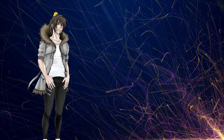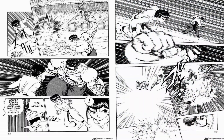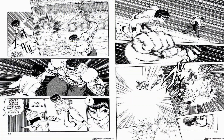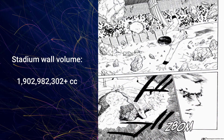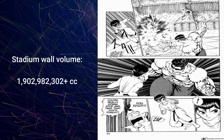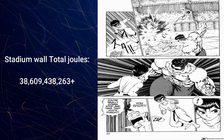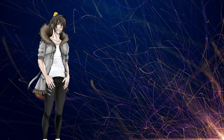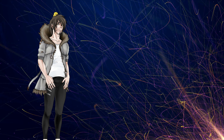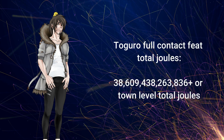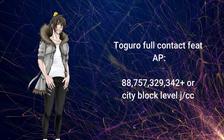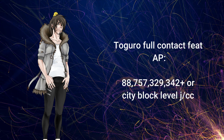For this feat, we're looking at a volume of this many cubic centimeters of cratered rock, coming in with total joules of this many. We still have the stadium wall to get — based on its size we're looking at this many cubic centimeters of destruction via explosive fragmentation, making for a total joules of this number. We need to factor in that it was merely air pressure, such that his full contact attack would carry at minimum at least this many total joules — or town level total joules — putting the AP at this many joules per centimeter cubed, or city block level, showing consistency once more.